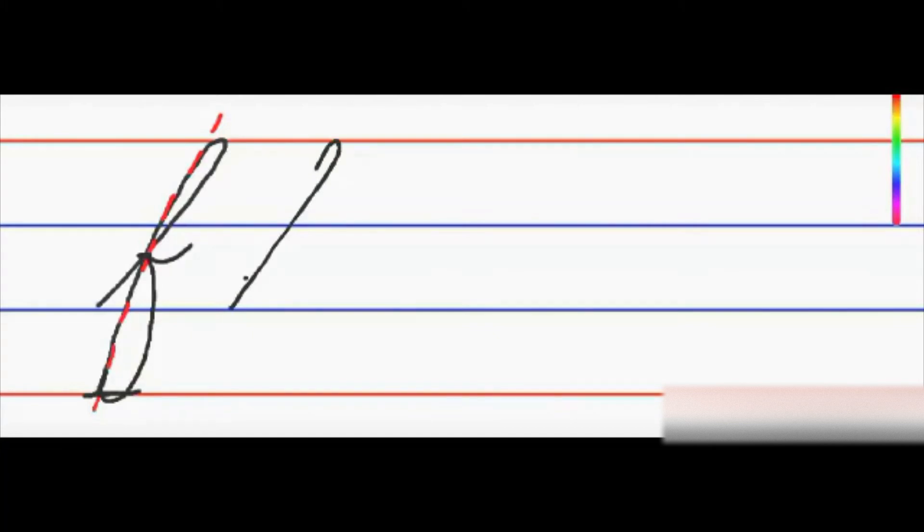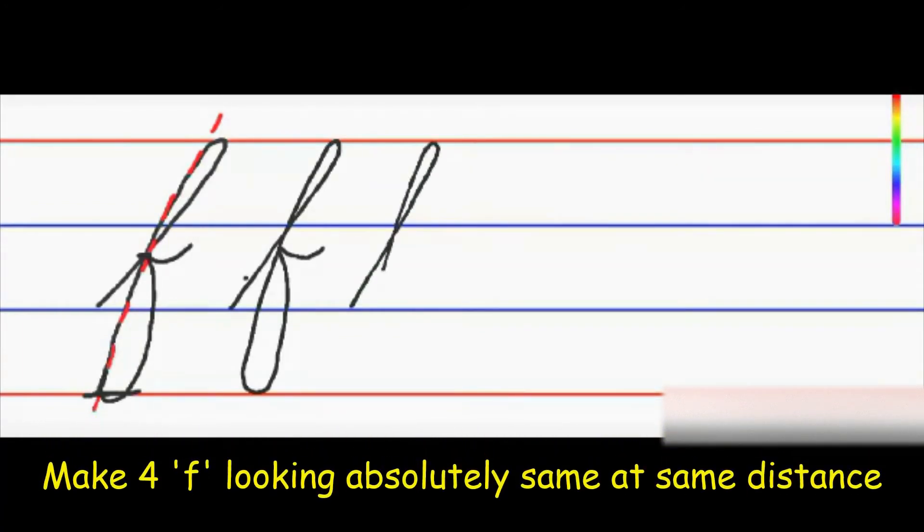Starting with slant line, crossing it over, making a thin loop, coming up and just pulling a tail. Trying to make successful four f. In case if one happens to spoil in between, you will have to retry it again till the time you get all four of them the same. So I believe this is looking good.